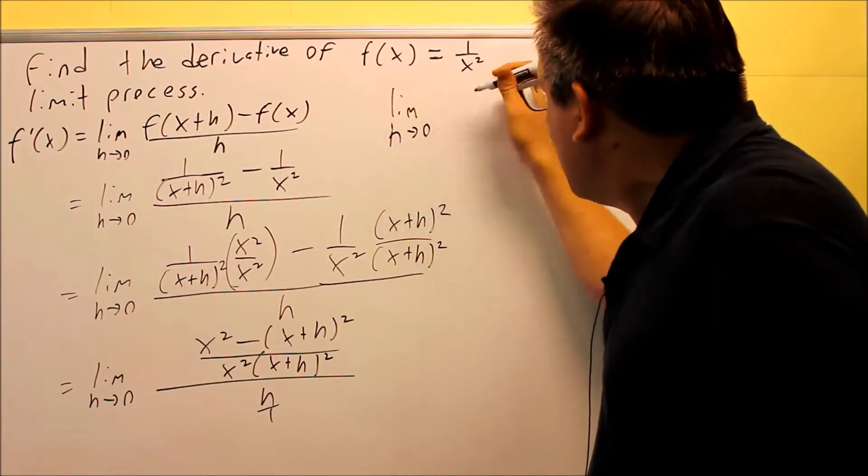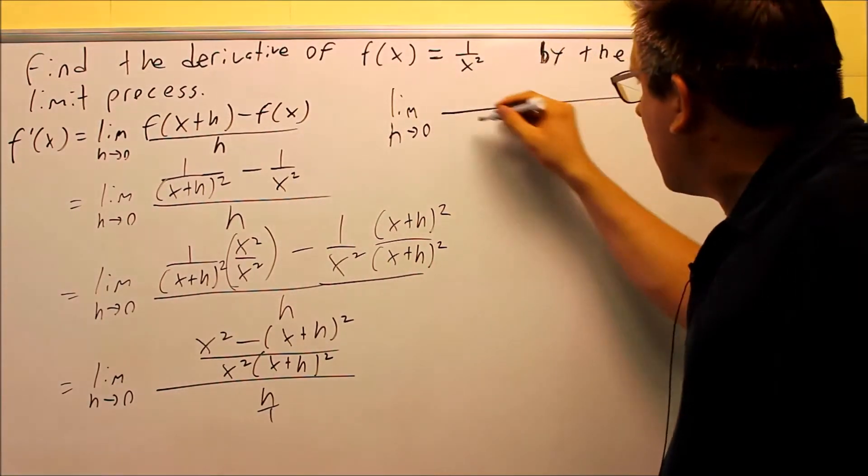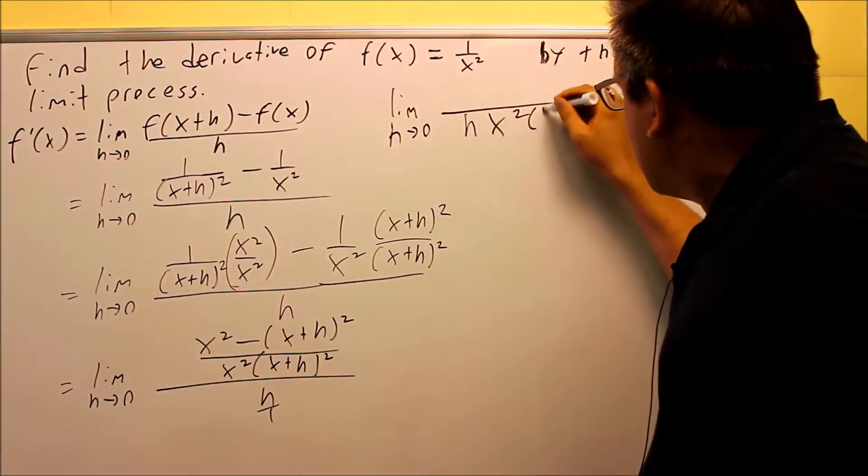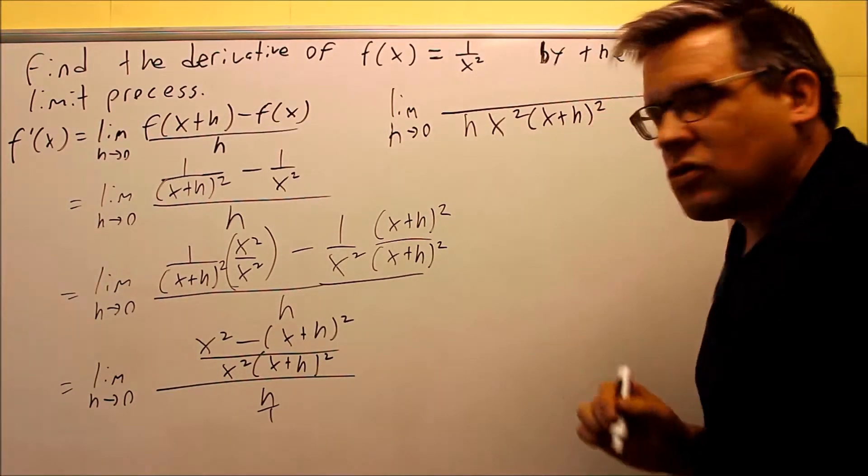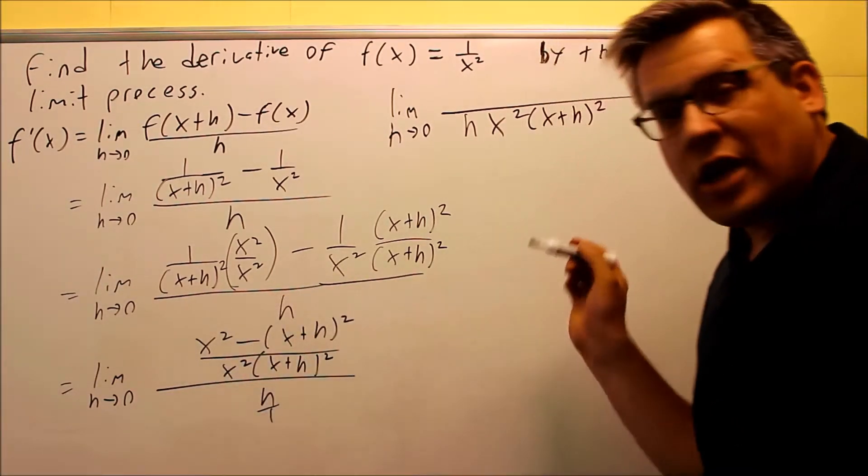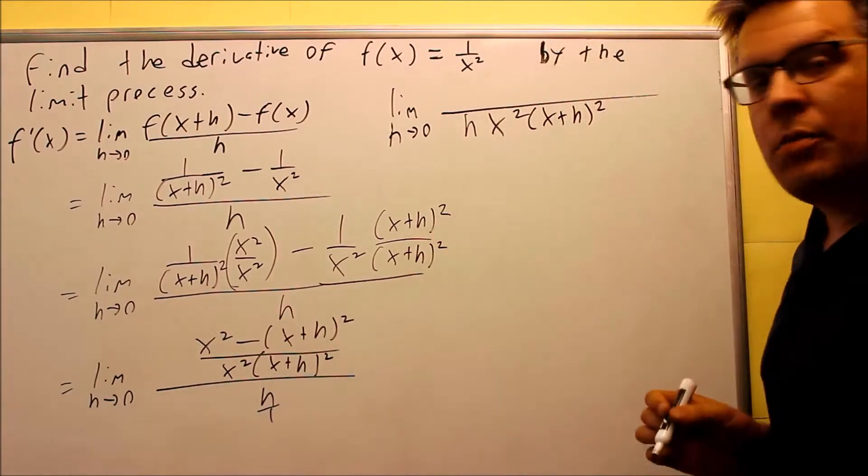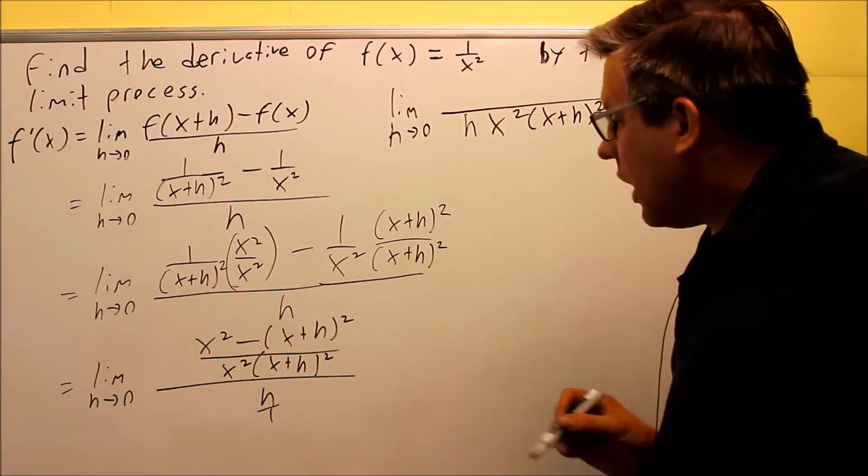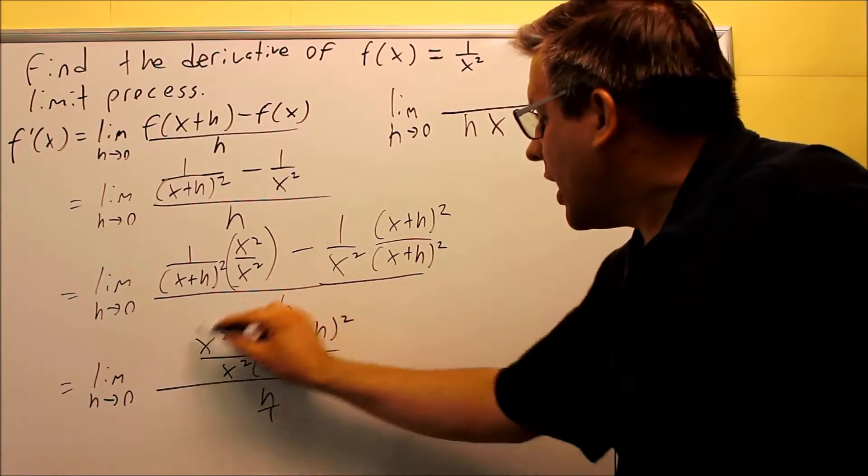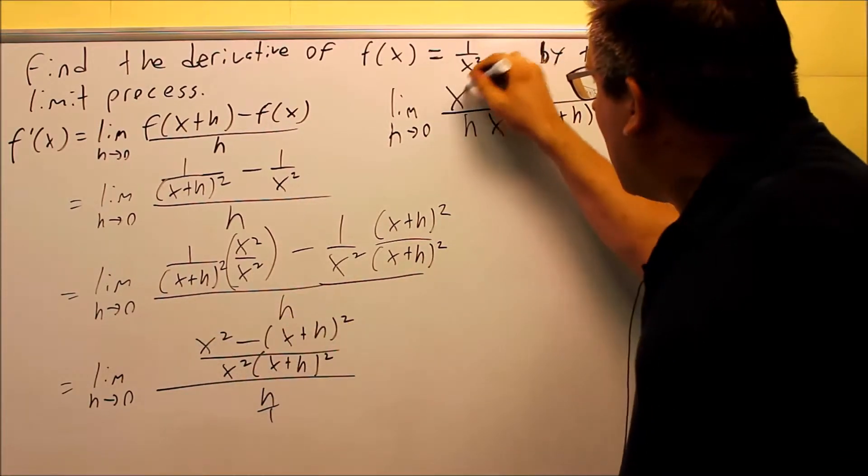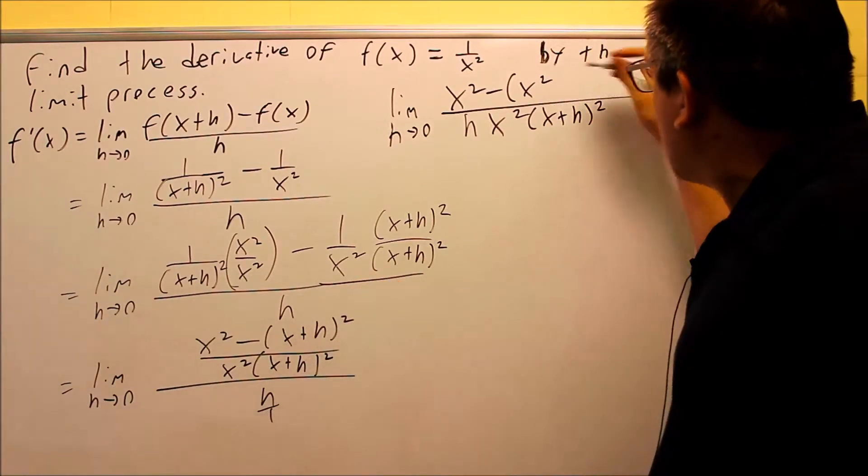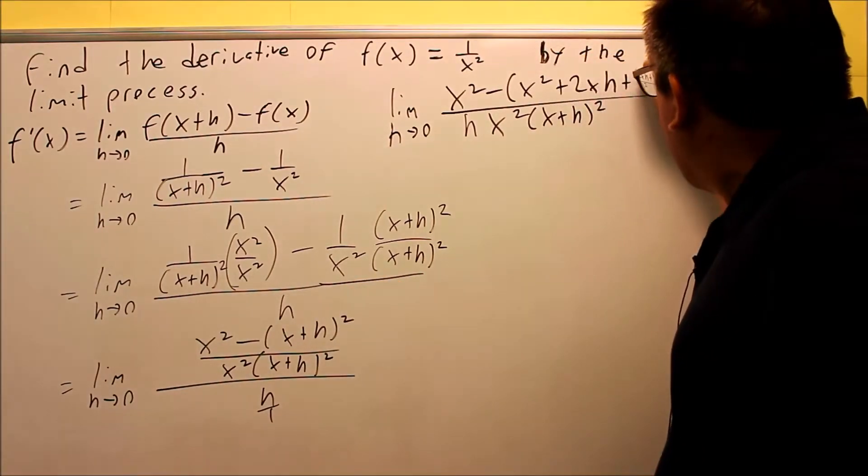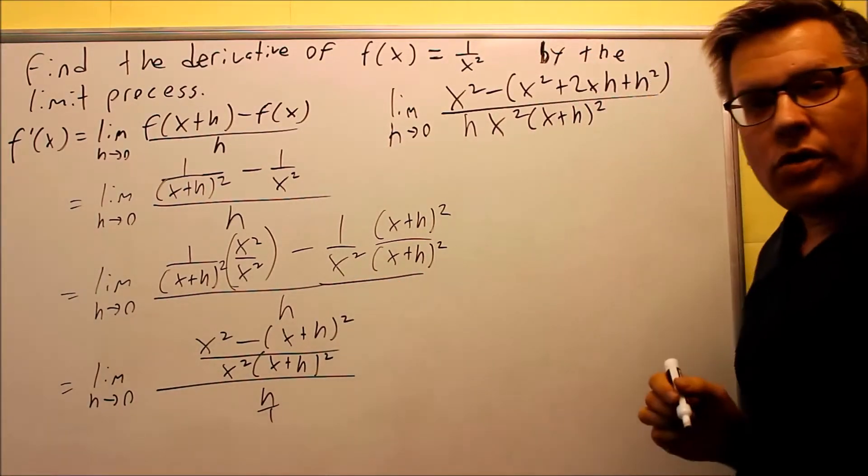So I'll do a couple steps at once. First of all, the h is going to end up on the bottom there, and I'm going to end up with this. So again, what I did, I took the top fraction, multiplied by 1 over h, the h ends up on the bottom there. Then, I need to simplify this top part. I have x squared minus, and then I'm going to foil out (x+h) squared, and if I do that, I'll get this one here.